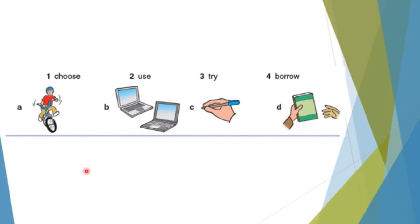Now, let's start with question one. Here, you're going to match the word with the picture. Today, I'm going to do the opposite. I will look at the picture, say it, then match it with the correct word. For example, look at the boy on the bike. What do you think is the correct answer for it? Choose. Use. Try. Or borrow.